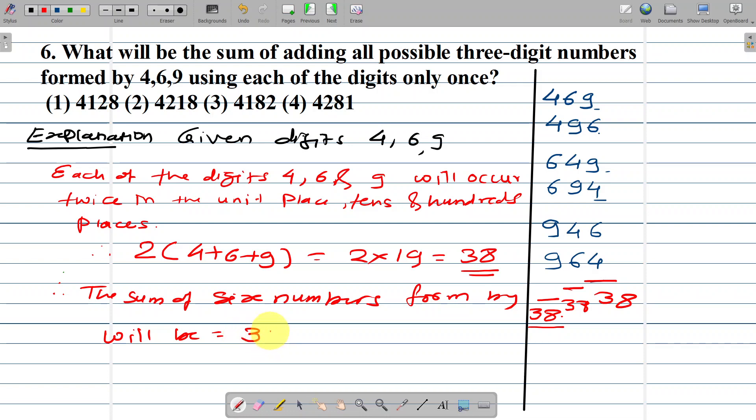Units place addition is 38 multiplied by 1, tens place addition is 38 multiplied by 10, and hundreds place addition is 38 multiplied by 100. So we get 38 + 380 + 3800.